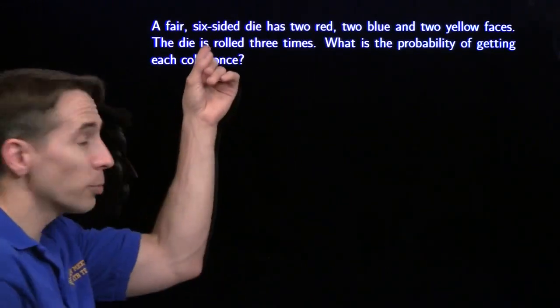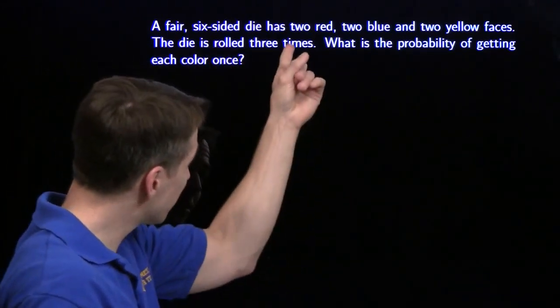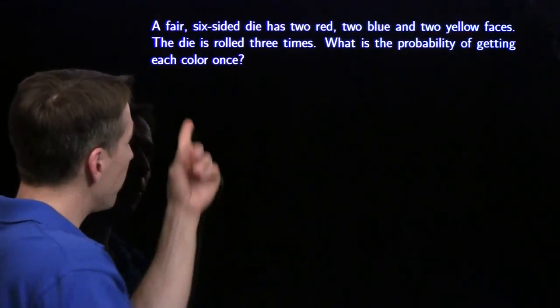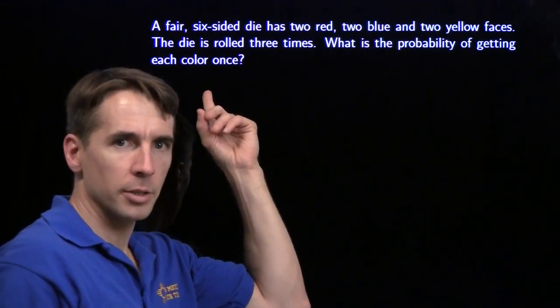In this problem, the steps are rolling this six-sided die, which has two red, two blue, two yellow faces. We're going to roll it three times and find the probability of getting each color once.